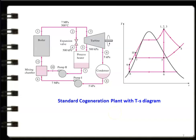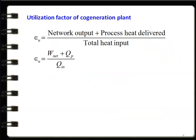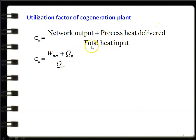An important parameter in the cogeneration plant is the utilization factor (ε_u), defined as: ε_u = (net work output from the steam turbine + process heat delivered) / total heat input. All quantities are in kW or kJ/s. The utilization factor (effectiveness) = (W_net + Q_process) / Q_input.